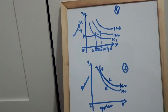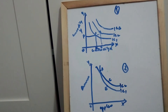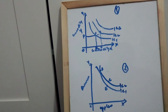The first property: indifference curves are always convex to the origin because of diminishing MRS. MRS declines because of the law of diminishing marginal utility. As the consumer consumes more and more apples, the marginal utility from apples keeps declining, and the consumer is willing to give up less and less of bananas. So indifference curves are convex to the origin.